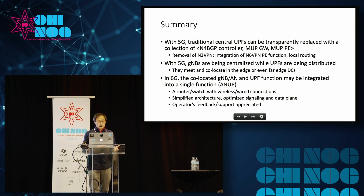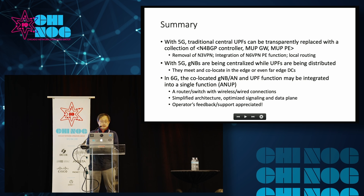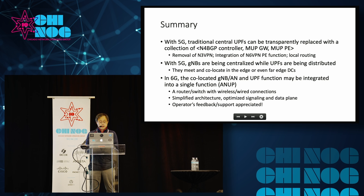In summary: with 5G, the traditional central UPF can be transparently replaced with a collection of N4-BGP controller, MAP gateway, and MAP PE — that is UPF-lite. In 6G, we can potentially integrate those functions into a single one to get a simplified, flattened architecture — basically a router or switch with wireless and wireline connections. I want to get operators' feedback and support so that we can bring this work forward.